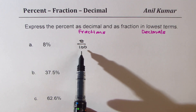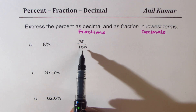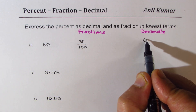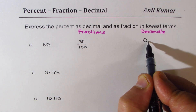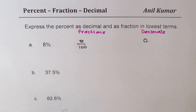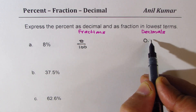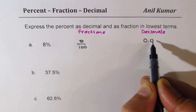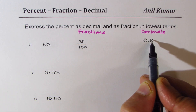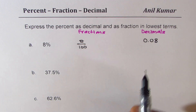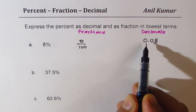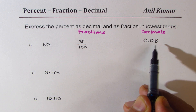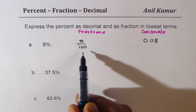Let me convert this to decimals. Dividing by 100 means just placing the decimal at the right place — two units. So it becomes 8 hundredths. This is the 10th position and that is the 100th position. So 8 hundredths will be the decimal equivalent of 8%.